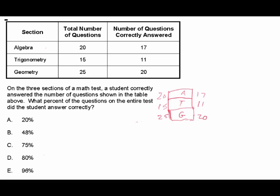I realize many of you may not need it broken down like this, but the point is that diagramming helps ensure you're interpreting the question correctly. This question could have been asked in different ways — for example, just the percentage correct on trigonometry and geometry. In this case, we need the percentage correct on the entire test, so we'll add all sections together and compare total correct answers to total questions.